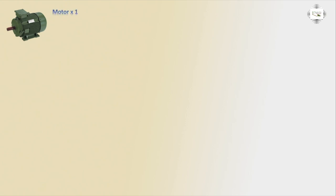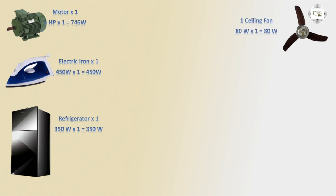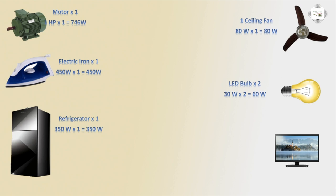First, a single-phase motor: one motor equals one horsepower, which is 746 watts. Electric iron: one piece at 450 watts. Refrigerator: one piece at 350 watts. Ceiling fan: one piece at 80 watts. LED electric bulb: two at 30 watts each, totaling 60 watts. Television or TV: one piece at 80 watts.